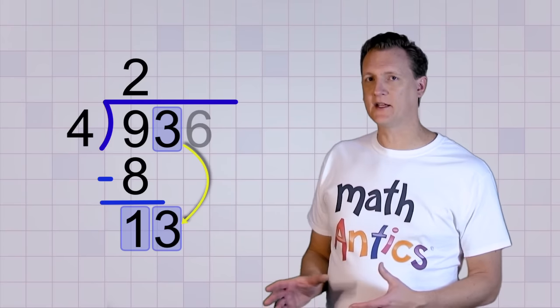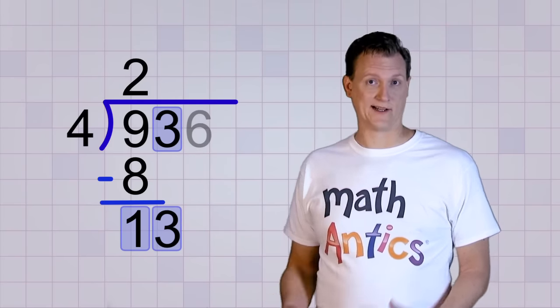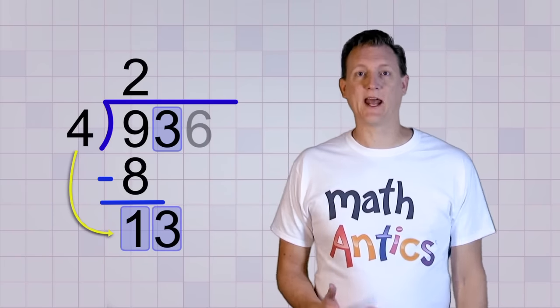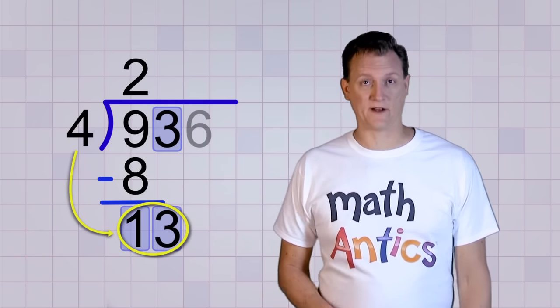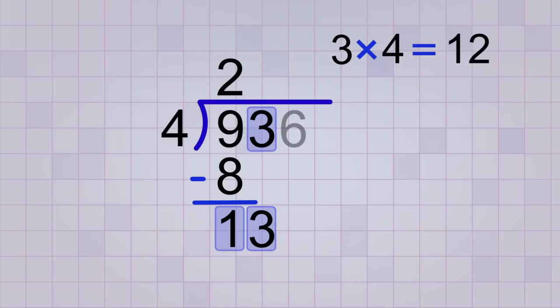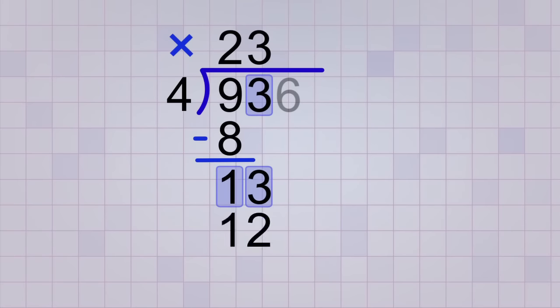Okay, so bringing down that next digit makes our remainder bigger. And that's good because before, the remainder was so small that 4 couldn't divide into it. But now it's 13 and 4 will divide into 13. So we ask, how many 4's will it take to make 13? Well, three 4's would be 12 and that's really close without being too big. So let's put 3 in our answer line. Yep, it goes right over the 3 because that's the next digit we were dividing in this digit by digit process. And then 3 times 4 is 12, which we put right below the 13 so that we can subtract to get the next remainder, which will also be 1.